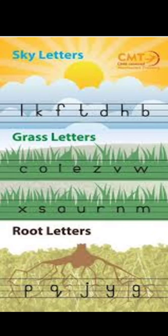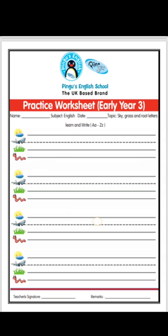What are Root Letters, students? Root Letters are the letters which have a stem and go down below the line. We have five Root Letters: P, Q, J, Y, and G.